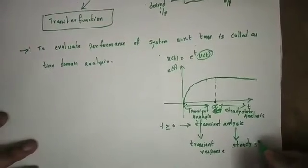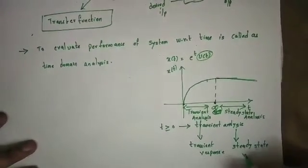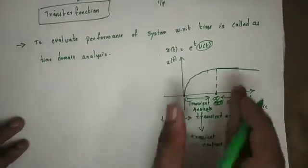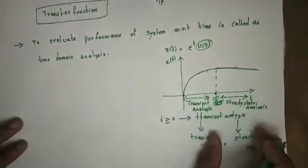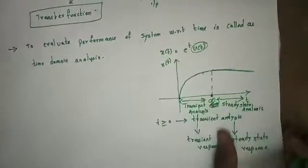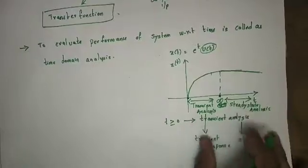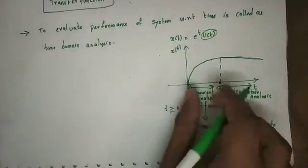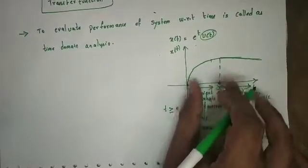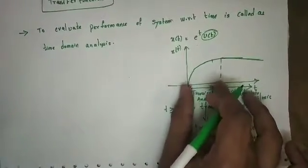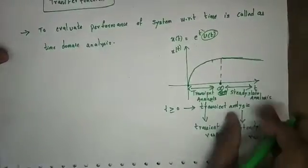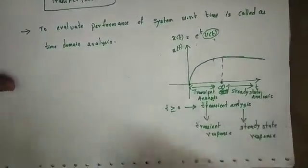So, steady state response — which is our response. Now you will have doubt, so we will repeat the same terminology: we will do the transient response, and that response is our response. Then we will do the steady state response. Here we have clarity.